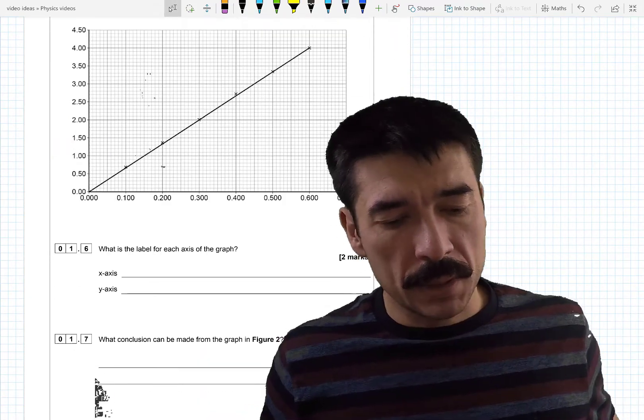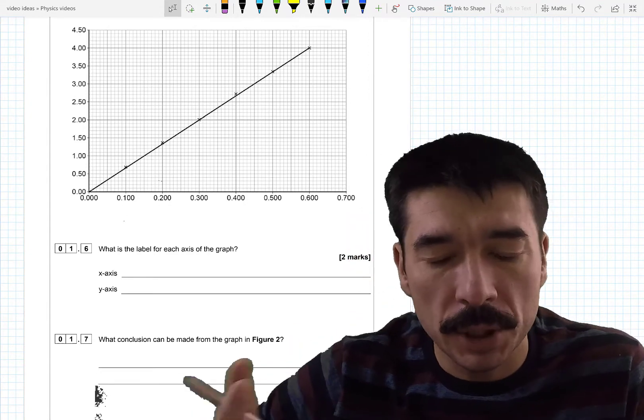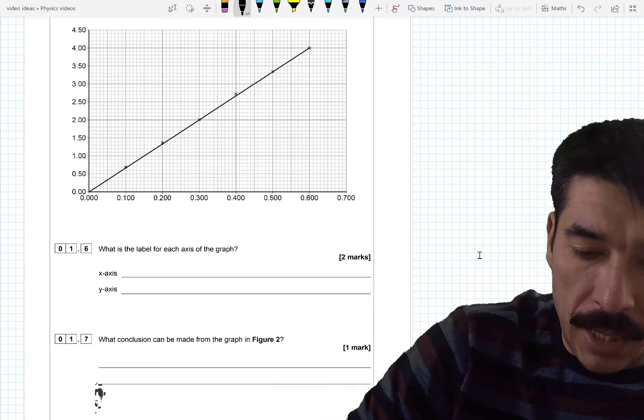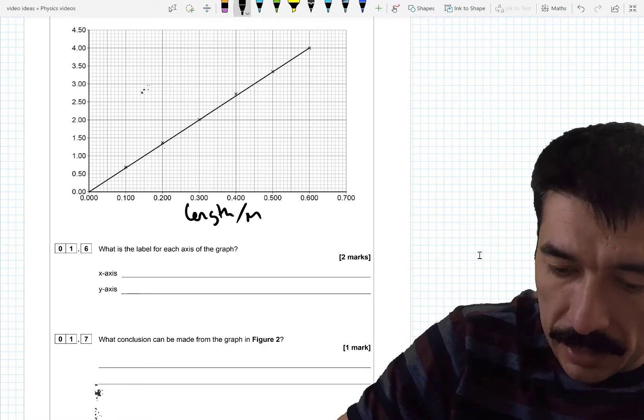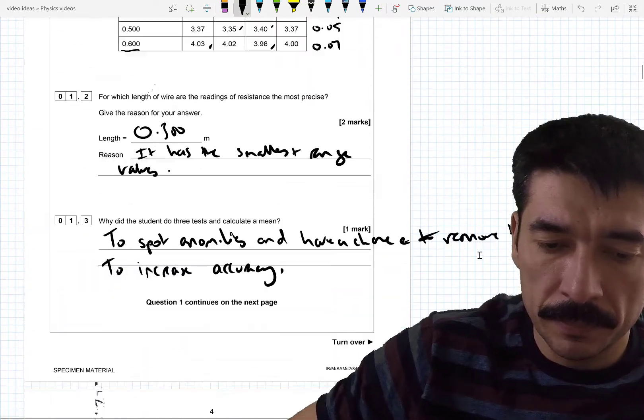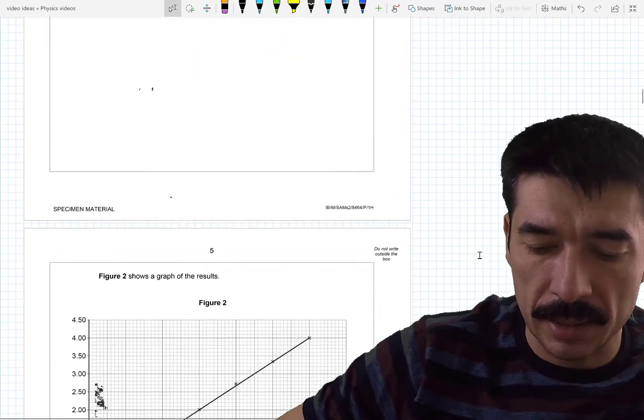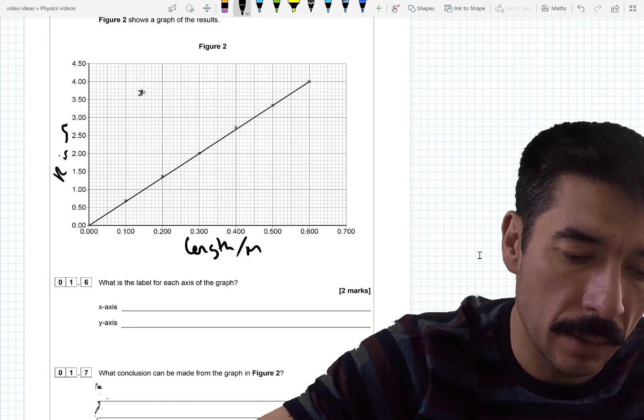Next question. What is the label for each axis of the graph? Right. We changed length. That was the independent variable. So on the x axis in the bottom. That would be length. And it was in meters I think. Check. Length in meters. And then the rest is resistance in ohms. R in ohms.